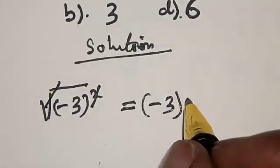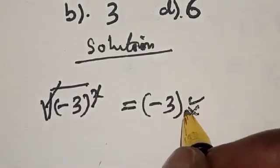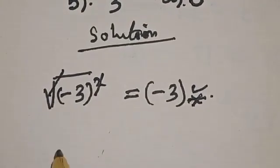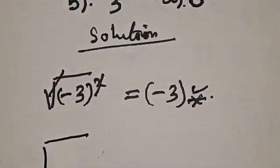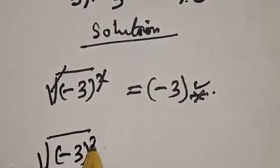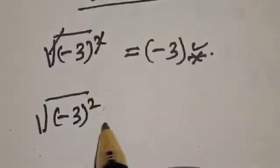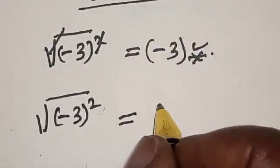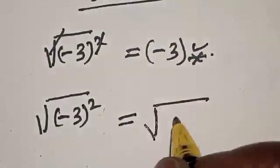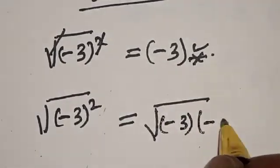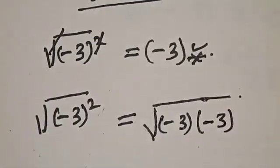So let's solve properly. We have square root of minus 3 square, then we know that this is equal to square root of minus 3 multiplied by minus 3. Now, the negative times negative, this is equal to plus.